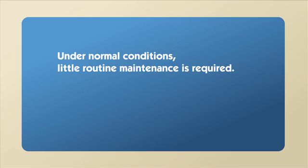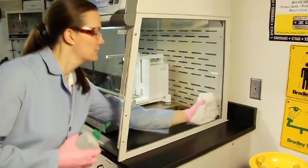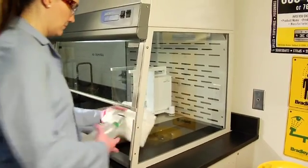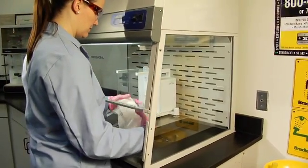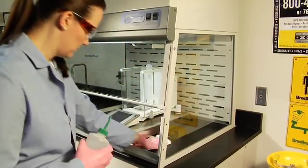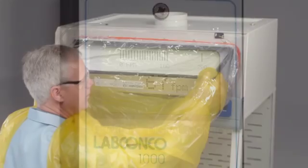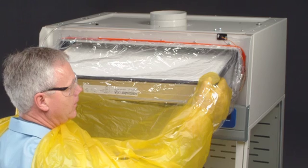Under normal operation, balance enclosures require little routine maintenance. After each use, all surfaces should be wiped down with a disinfectant or cleaner. Weekly, the exterior of the unit should be wiped down to remove dust. Twice per year, the face velocity should be tested and the HEPA filter should be tested for pinhole leaks by a certified technician.